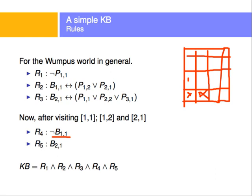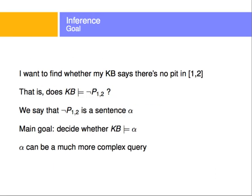With all these rules in the knowledge base, I can evaluate them as soon as I know the value of any variable. The goal is to ask questions — for example, is there a pit at (1,2)? I want to find whether my knowledge base entails 'not P12', meaning there's no pit at (1,2). So not P12 is my query sentence alpha.